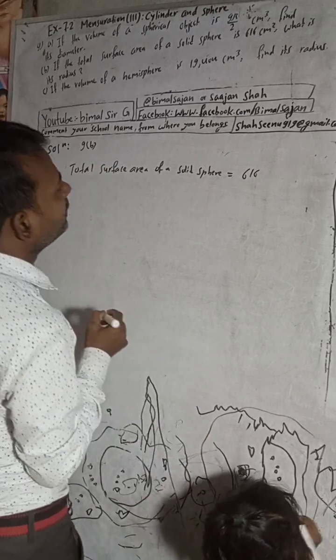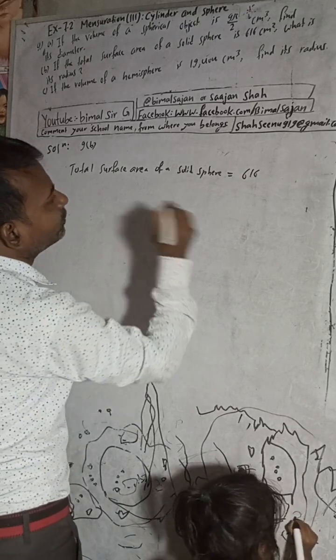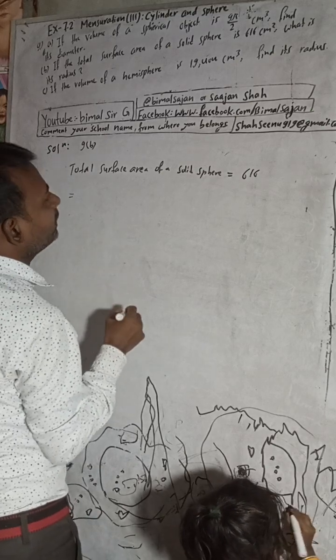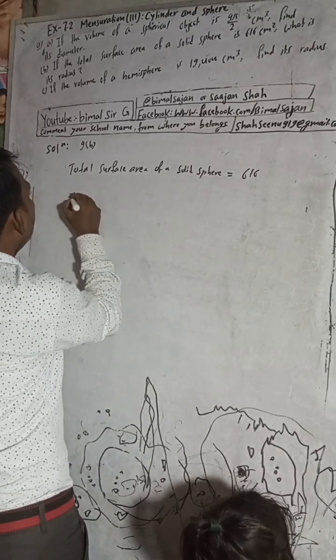The total surface area of a solid sphere is equal to 616 cm². What is the formula for the total surface area of a sphere? The formula is 4πr² = 616.